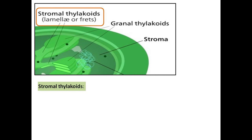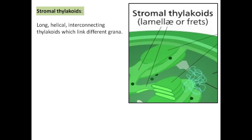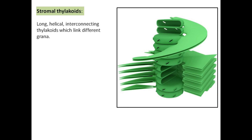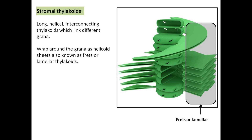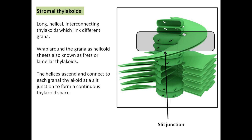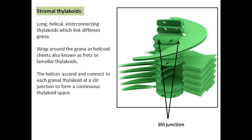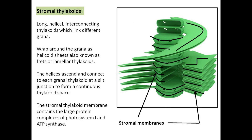Stromal thylakoids are long, helical, interconnecting thylakoids which link different grana. They wrap around the grana as helicoid sheets, also known as frets or lamellar thylakoids. The helices ascend and connect to each grana-thylakoid at a slit junction to form a continuous thylakoid space. The stromal thylakoid membrane contains the large protein complexes of photosystem I and ATP synthase.